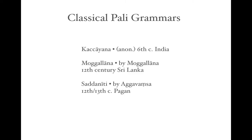If we look at the Pali grammatical traditions, we have basically three main treatises. The Kachayana, which is anonymous although traditionally ascribed to Maha Kachayana, the disciple of the Buddha — but there are many reasons to believe that is not possible. It is usually dated to the 6th century Common Era and was probably composed in India. Next comes the Moggallana Vyakarana, a 12th-century grammar by Moggallana, a scholar from Sri Lanka. For more on the historical context, I refer to Alastair Gornal's presentation in this same series and his book Rewriting Buddhism.